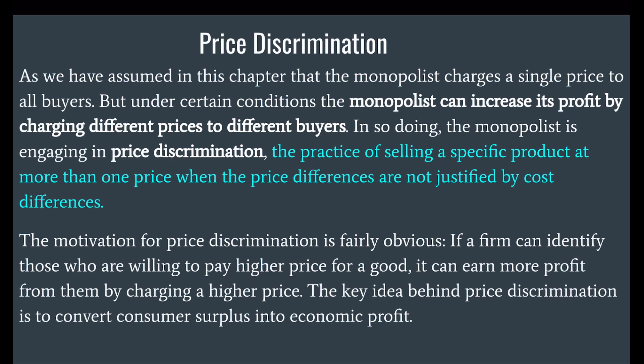As we have assumed in this chapter, the monopolist charges a single price to all buyers. But under certain conditions, the monopolist can increase its profit by charging different prices to different buyers. In doing so, the monopolist is engaging in price discrimination — the practice of selling a specific product at more than one price when the price differences are not justified by cost differences. The key idea behind price discrimination is to convert consumer surplus into economic profit.